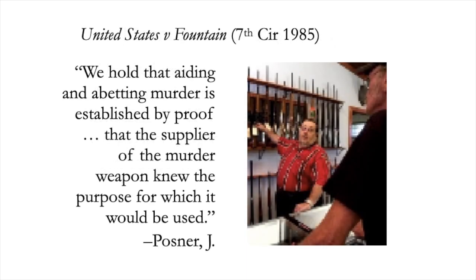In United States versus Fountain, a Seventh Circuit case, the court wrote: 'We hold that aiding and abetting murder is established by proof that the supplier of the murder weapon knew the purpose for which it would be used.' This was a case in which a prisoner knowingly facilitated the killing of a prison guard. It could be that Judge Posner's declaration would not be applied in a commercial context, even in the Seventh Circuit.